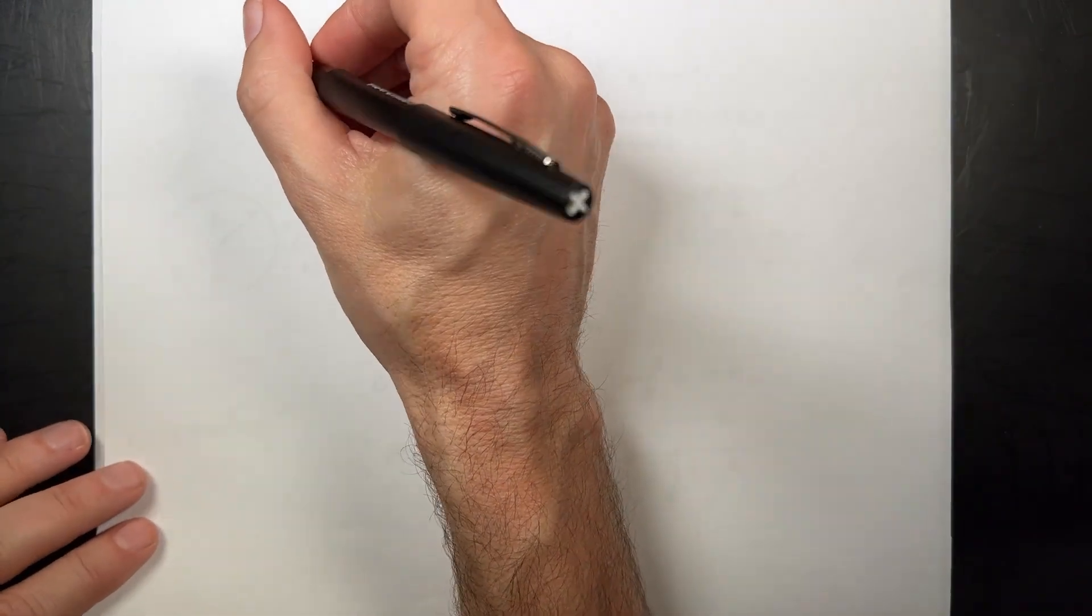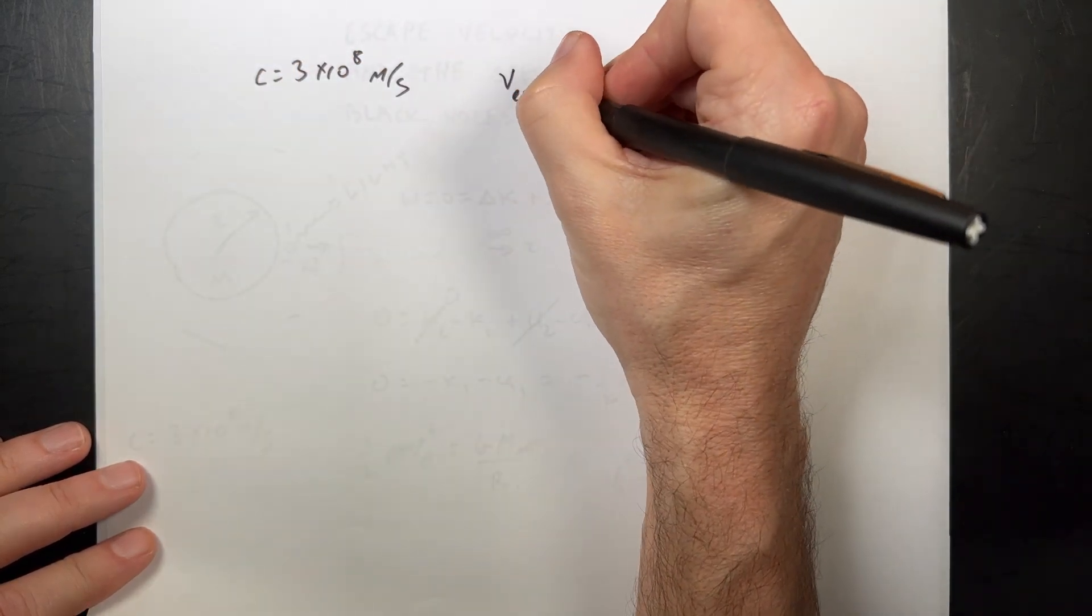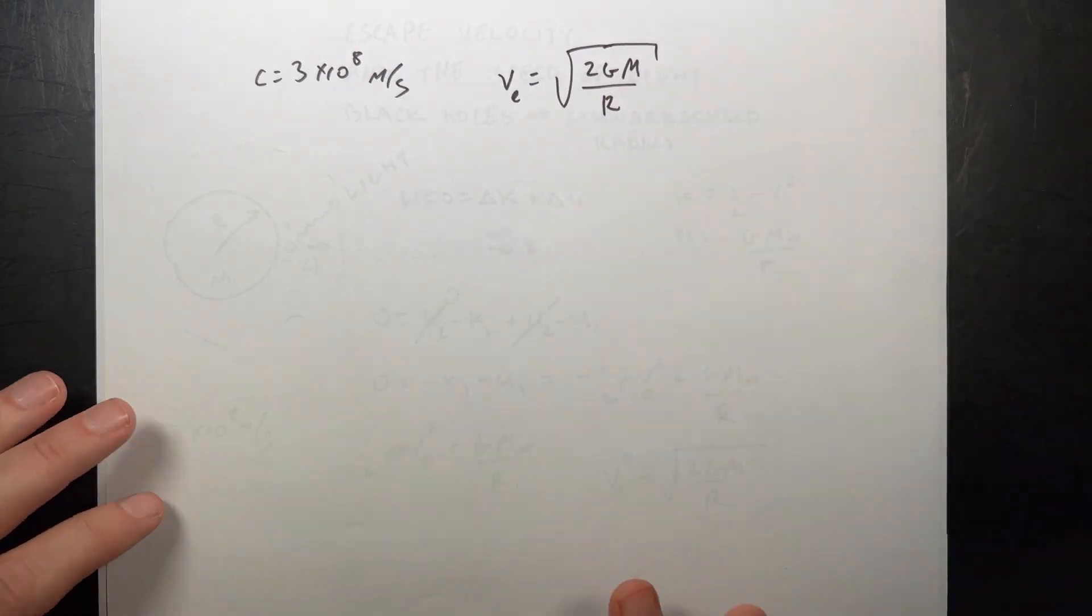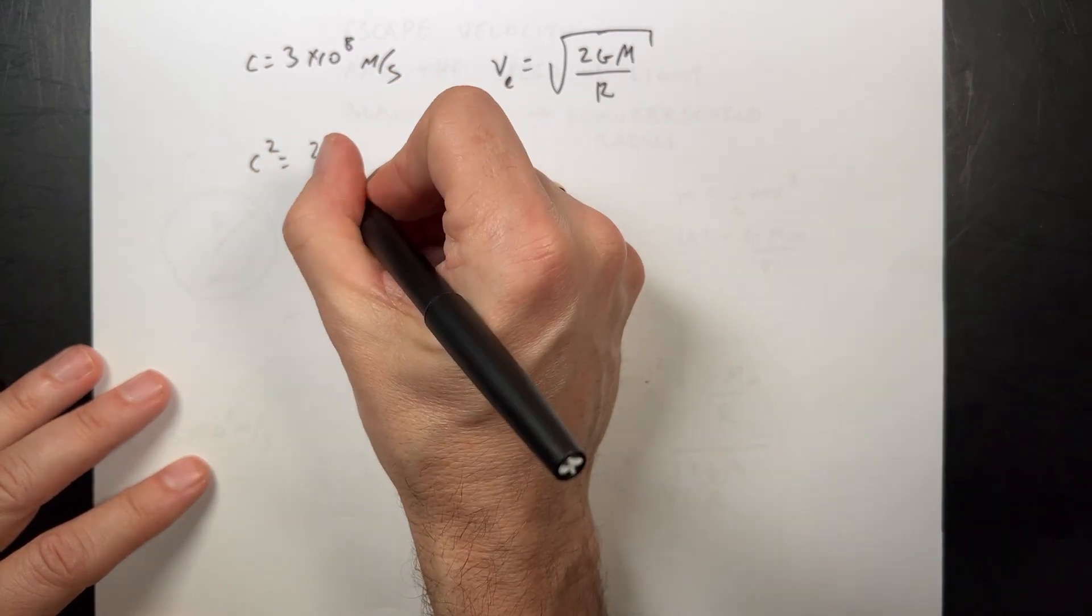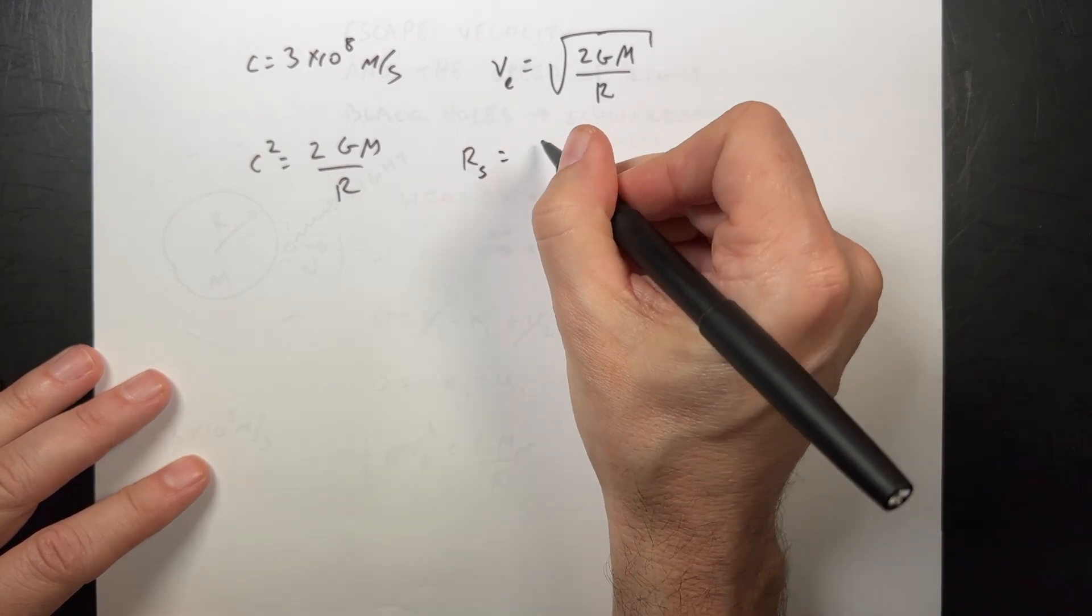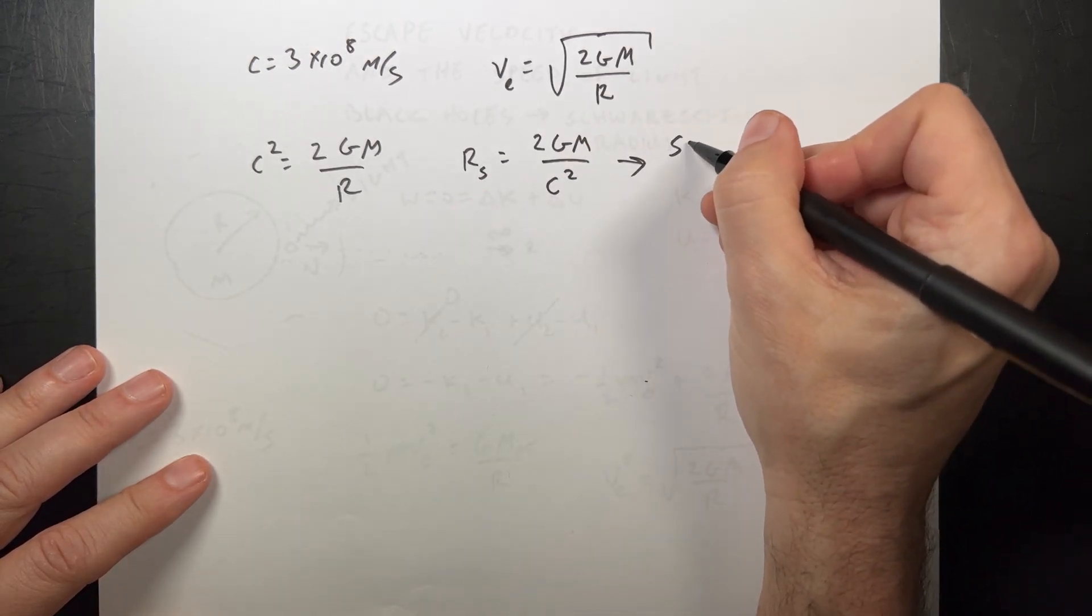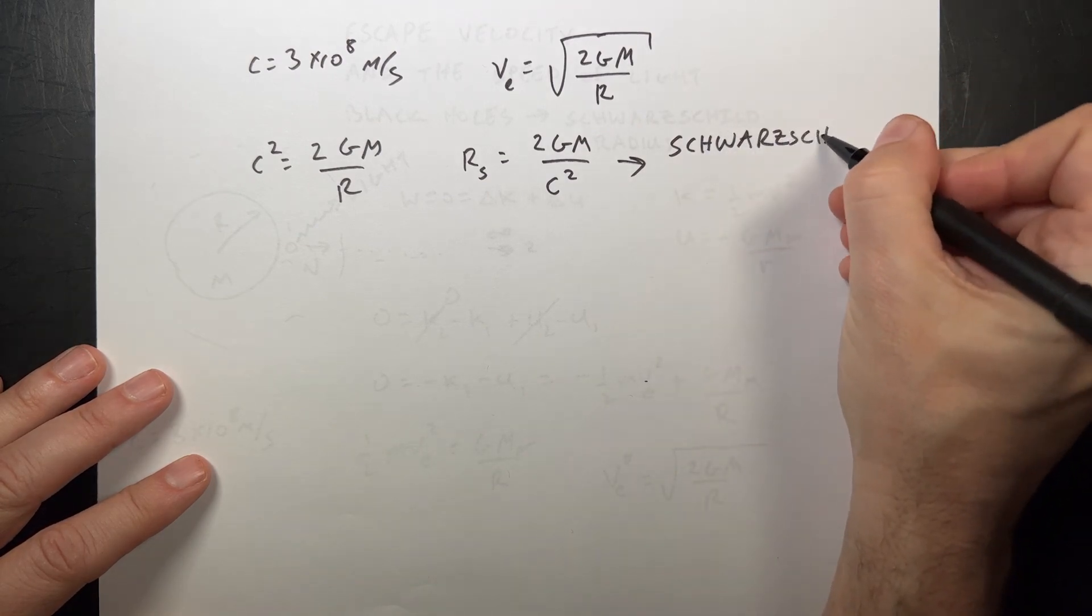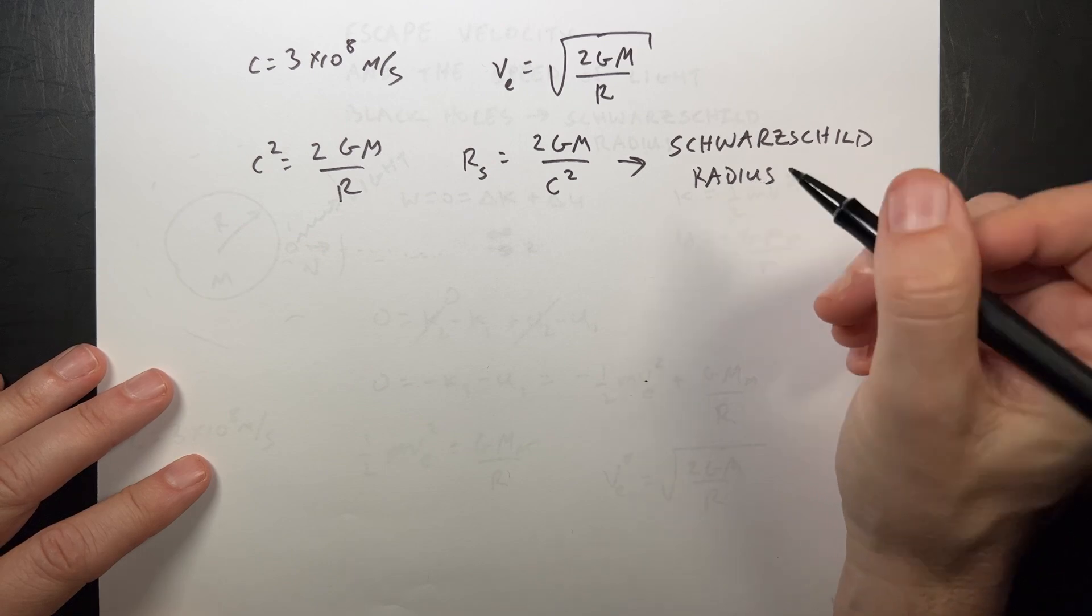Okay, so I have c equals three times ten to the eighth meters per second. v_escape is the square root of 2 G m over r. It could be anything. It doesn't have to be the Earth. And now let's put this as c. So we square both sides. I get c squared equals 2 G m over r. If I solve that for r, I get r. I'll put R_s is equal to 2 G m over c squared. And this is the Schwarzschild radius.